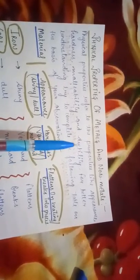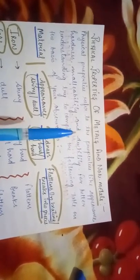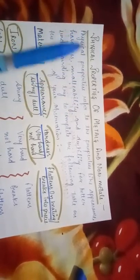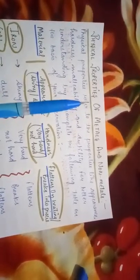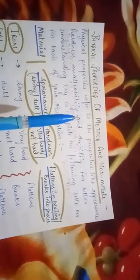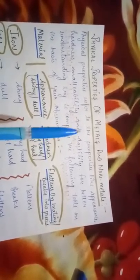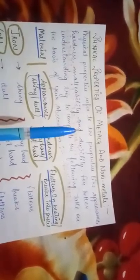When you can convert a substance into sheets we say that the substance is malleable. Ductility refers to its capability to get converted into wire-like substances. Like when you can make wires of that particular substance, then we say that that particular substance is ductile.